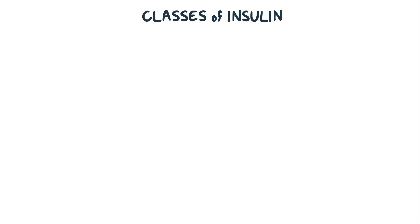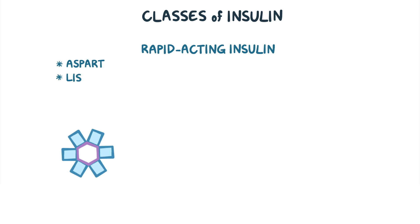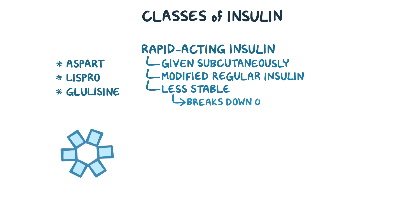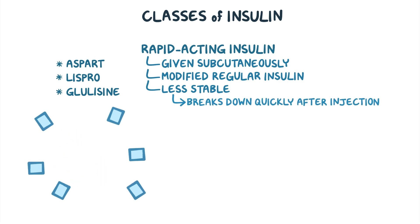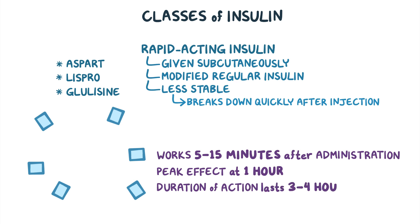Let's look at each class of insulin, starting with rapid-acting insulins, which include insulin aspart, lispro, and glulisine. These medications are given subcutaneously, and they are actually modified versions of regular insulin with different sequences of amino acids. This makes them less stable, and they break down into single monomers soon after injection. Rapid-acting insulins begin working within 5 to 15 minutes of administration, with a peak effect at one hour. Their effects last for three to four hours.